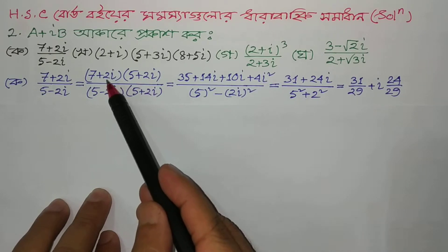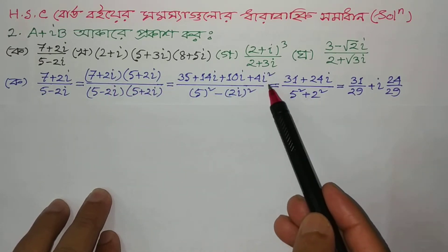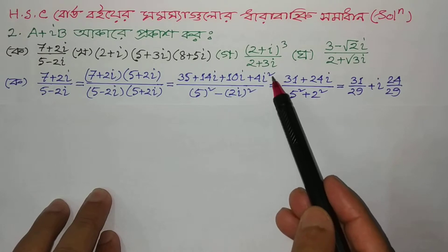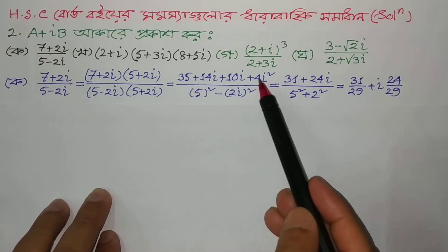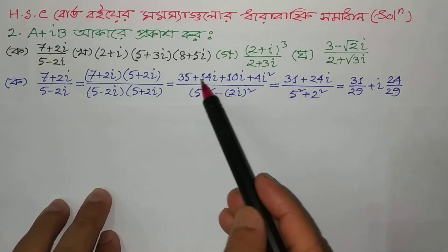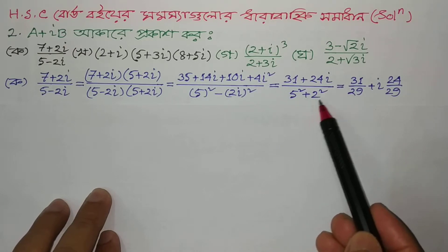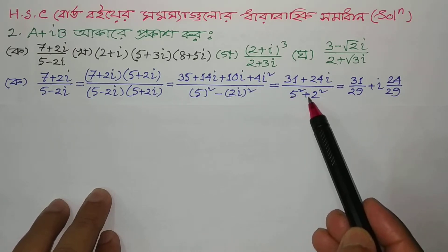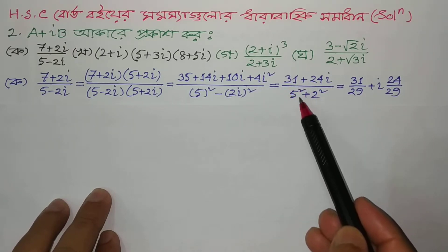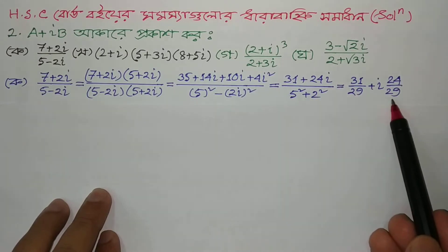We get 10i, and 2i gives 4i squared. Since i squared is minus 1, we get minus 4. So 35 minus 4 gives 8i, then 31. We get 34, 14, 10, then 24i and 20i, and 30i. Then partitioning is 31 by 39, and 24 by 39.